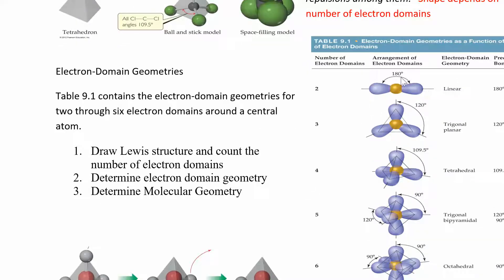We need to assign an electron domain geometry. If you have two electron domains, they get as far away as possible — that's 180 degrees — and we call that linear. If you have three electron domains — whether bonding, non-bonding, lone pairs, multiple bonds, or single bonds — it's called trigonal planar, and if they're all bonding the bond angles will be 120 degrees.